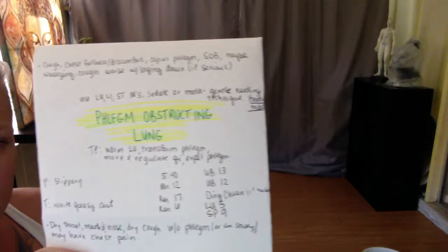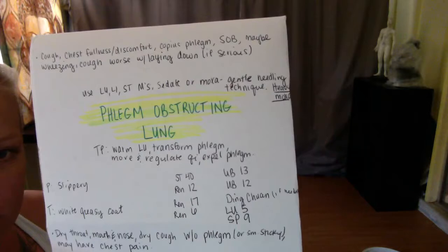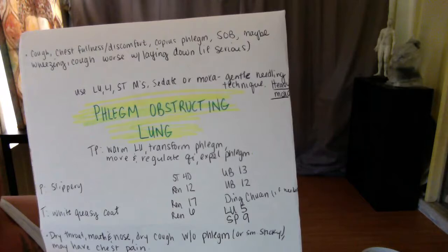Phlegm obstructing the lung: cough, chest fullness, discomfort, copious phlegm, shortness of breath, maybe wheezing cough, worse with lying down if serious.